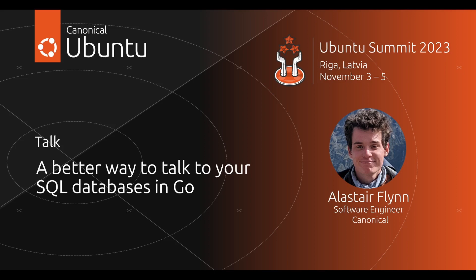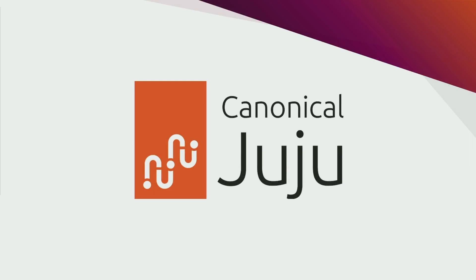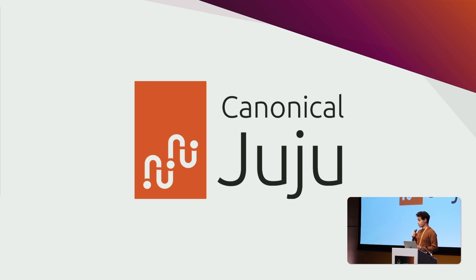I'm Alistair and I'm a software engineer at Canonical. Today I'd like to talk about an interesting problem we faced and an interesting solution. At Canonical we make a product called Juju for managing cloud applications, but for this talk, Juju is 1.6 million lines of Go code that uses MongoDB to store its state. We've decided to replace Mongo with a SQL database because Mongo is slowing it down. This means replacing all the Mongo transactions with SQL queries.